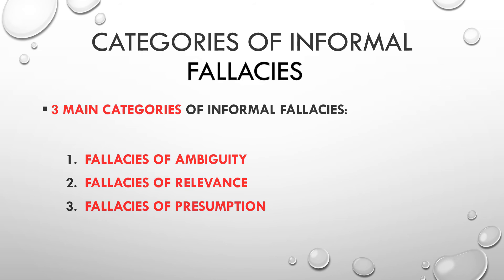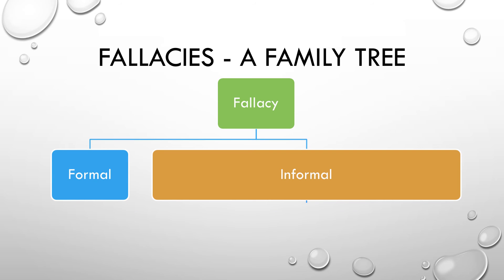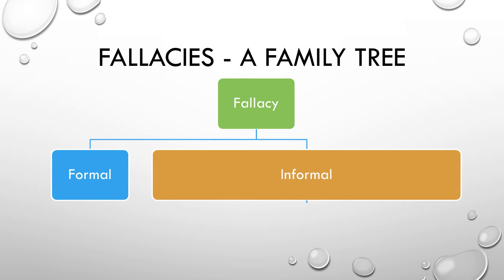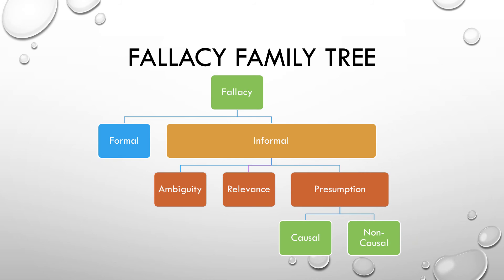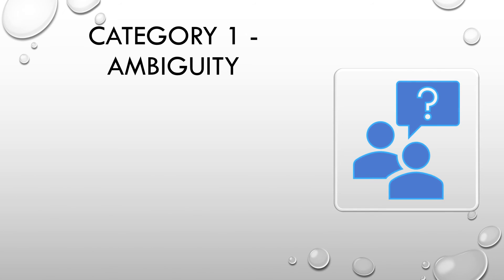Let's take a look at basically a fallacy family tree. If we put this into a Porphyrian tree, we could do it this way. There's the general category of fallacy — any error in logic — and we can break that down into the two kinds we just discussed: formal fallacies and informal fallacies. Following down from the informal fallacies, we've got those three categories: fallacies of ambiguity, relevance, or presumption. Under presumption we can break it down further into those that are causal and those that are non-causal. I'm going to be breaking all of our fallacies down in this exact way.